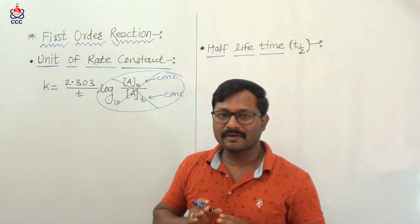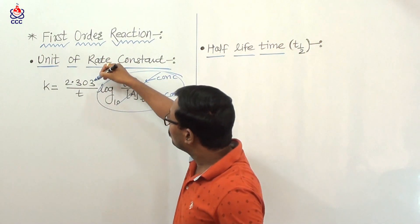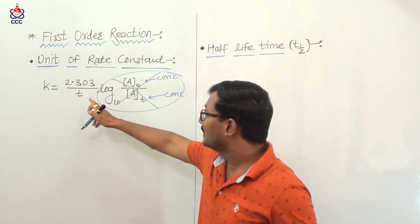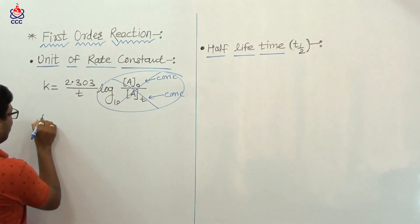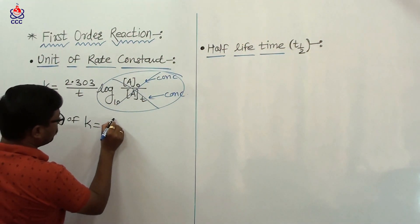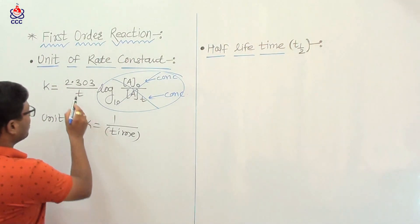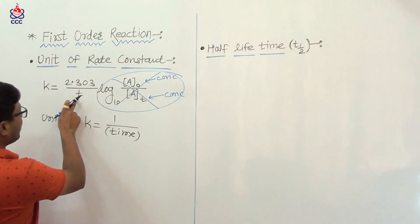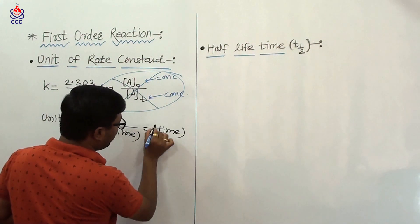The equation simplifies to k is equal to 2.303 upon t. Now 2.303 is a number, it is a constant. What remains is the time term. It means the unit of rate constant k is equal to 1 upon time, which is time inverse.